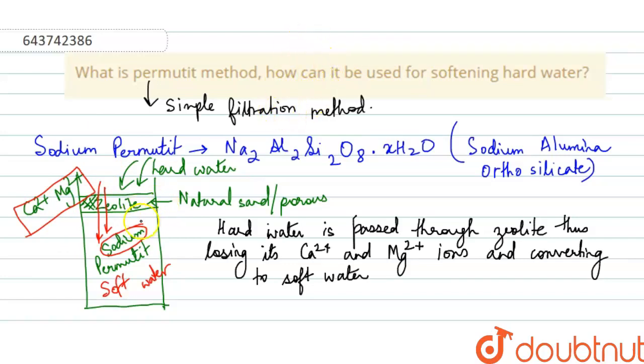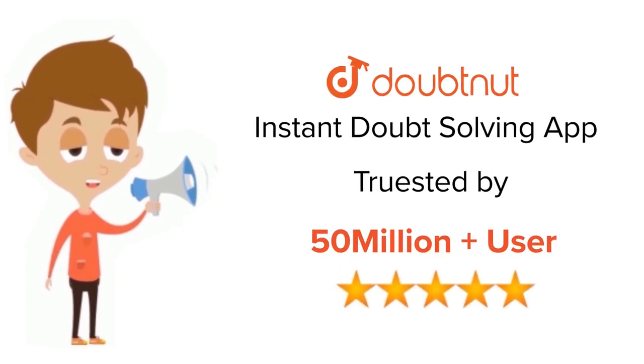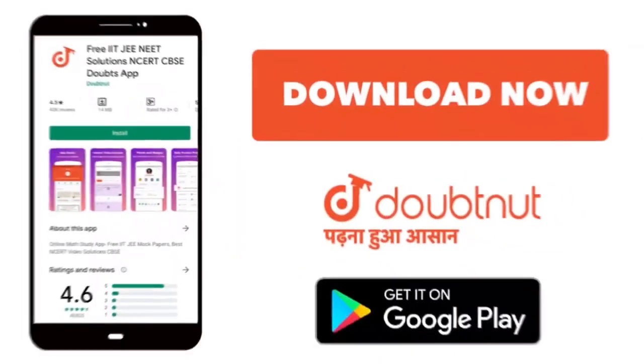So sodium being in this permutite, what happens, it reacts with the water to become soft water, whereas with permutite, Ca2+ and Mg2+ react to make Ca2+ and Mg2+ related permutites. So this is your complete answer. Thank you. For class 6-12, IIT-JEE and NEET level, trusted by more than 5 crore students, download Doubtnet app today.